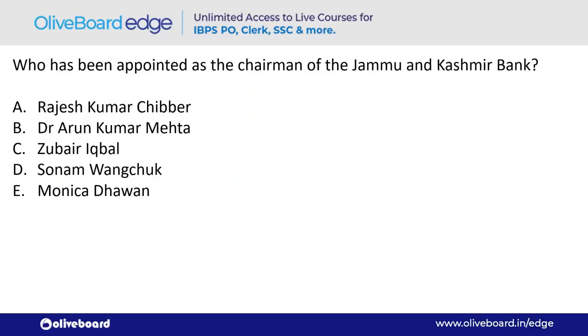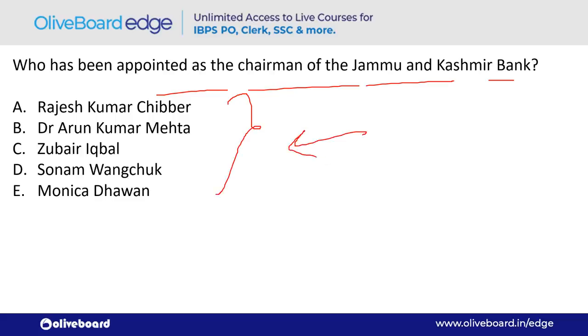Who has been appointed as the Chairman of Jammu & Kashmir Bank (J&K Bank)? The answer is Rajesh Kumar Chhibbar — option A.